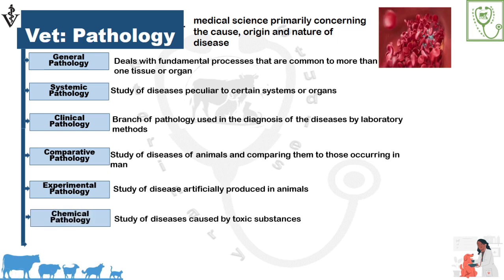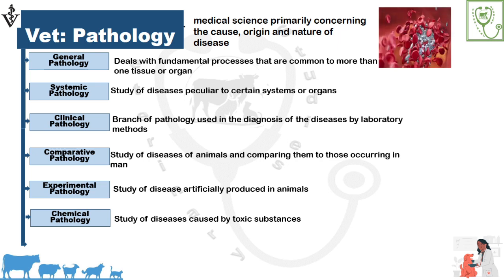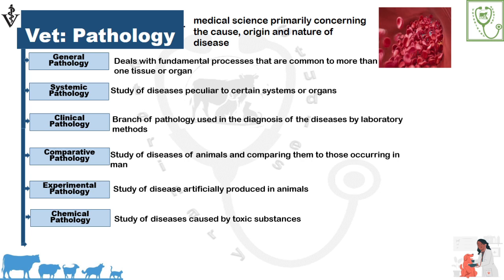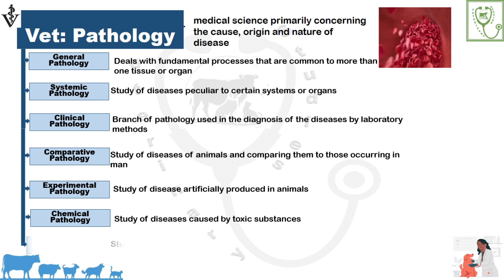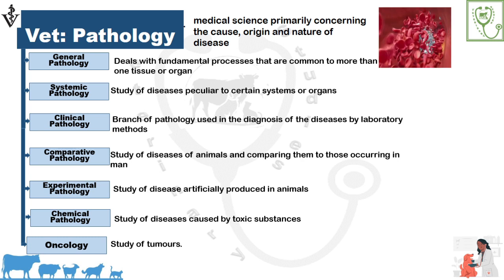Chemical pathology is the study of diseases caused by toxic substances, such as lead, which causes lead poisoning in ruminants. Oncology is the study of tumors or cancers.